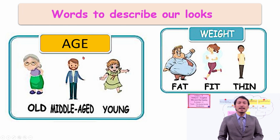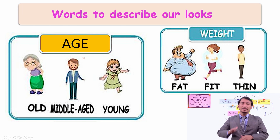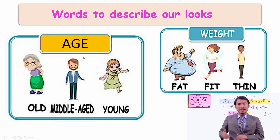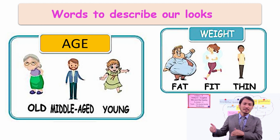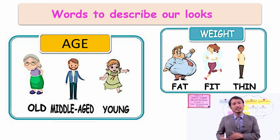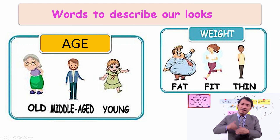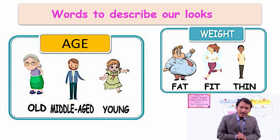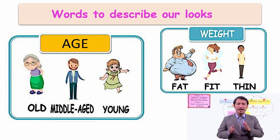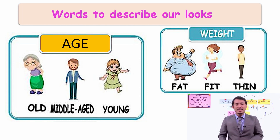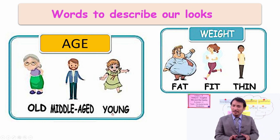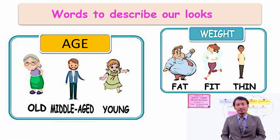According to age, you can say — if someone has many, many years, then you can say old person. And if someone is in your father's age, in the middle between old people and young people, then they are middle-aged. And children like you are young people.